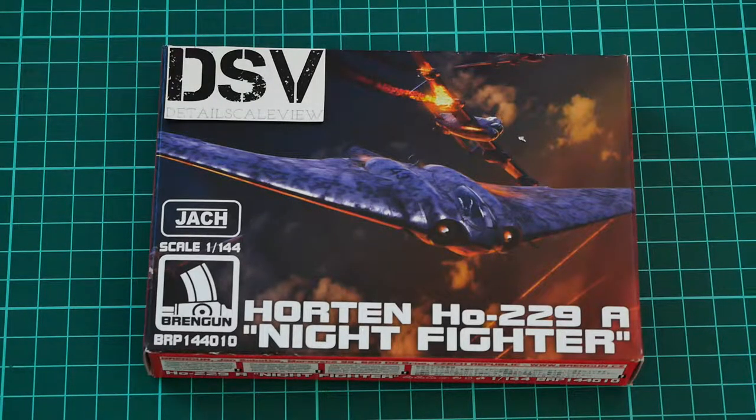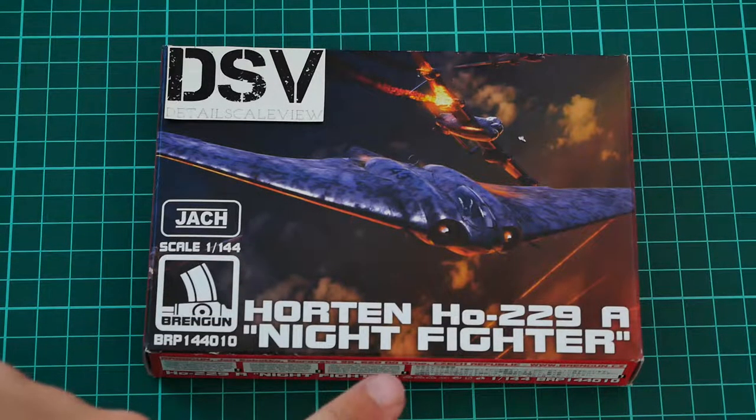Hello everyone, today we have a new video review. As you can see, this time we're going to check a fresh release from Brengun - that's a 1:144 scale Horten Ho 229A. As you can see, that's a night fighter version.